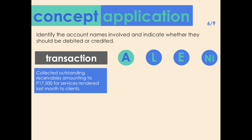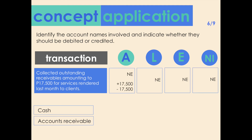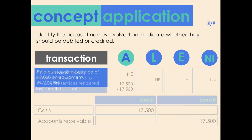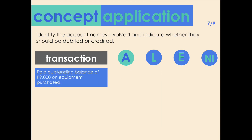Transaction six: collected outstanding receivables of 17,500 for services rendered last month. Accounts affected: cash and accounts receivable. The net effect on assets is zero since the increase due to cash collection is offset by the decrease in accounts receivable. Cash should be debited to record the cash receipt while accounts receivable should be credited to record the decrease.